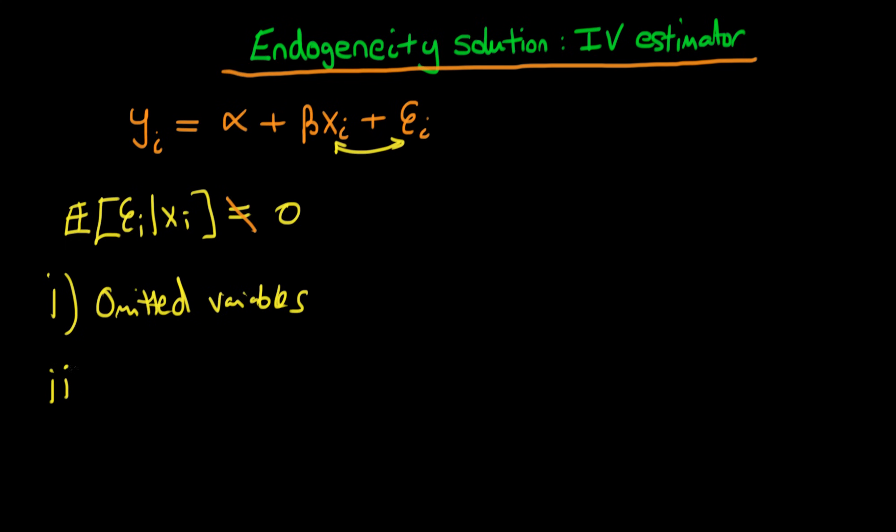The second way we can get endogeneity is if we have some sort of measurement error. In specific, it's not just measurement error in any variables—it has to be measurement error in the independent variables, so we've got some measurement error in our x here.